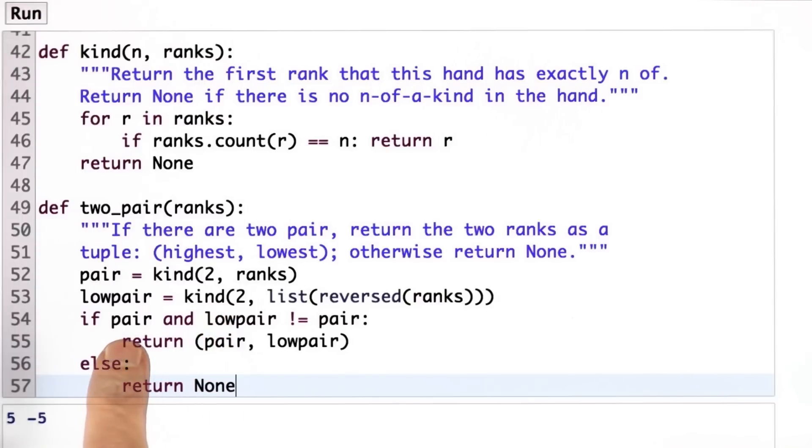So now if I found a pair and I found a low pair, which is not equal to the pair, then I want to return the two of them. Otherwise I just returned none.